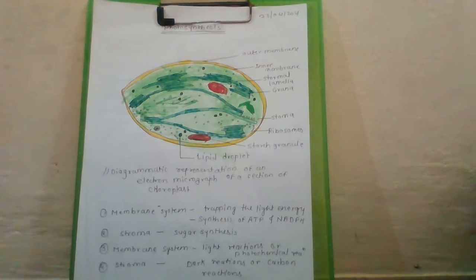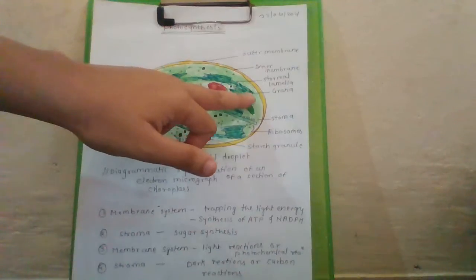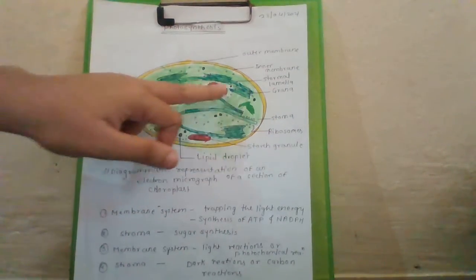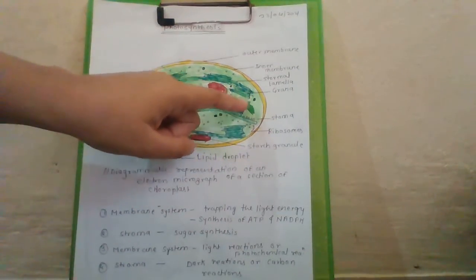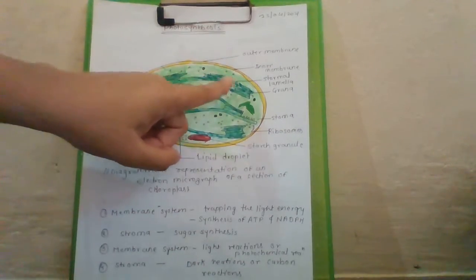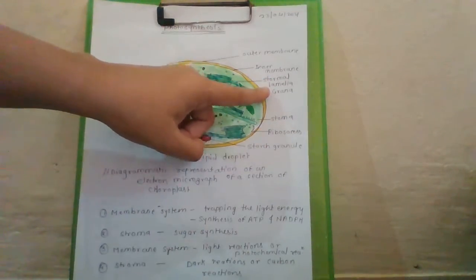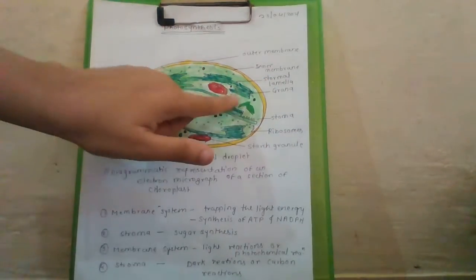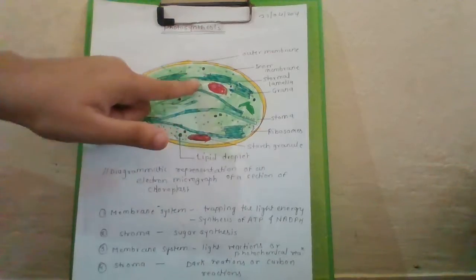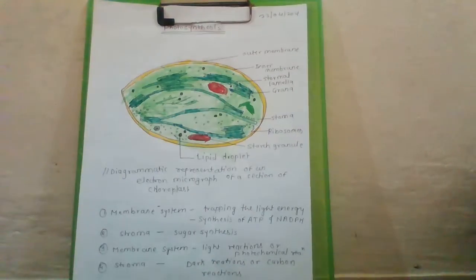Within the chloroplast there is a membranous system consisting of grana. Grana are bundles of thylakoids. The segment connecting multiple grana is called stromal lamella.